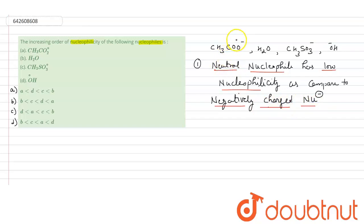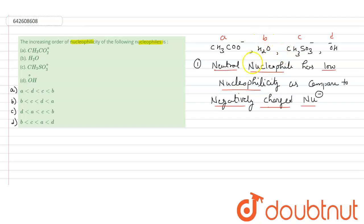Let's assign labels: this is A, B, C, and D. We can see that A, C, and D are negatively charged nucleophiles, and B is the neutral nucleophile. According to this concept, B — that means water — has a low nucleophilicity.